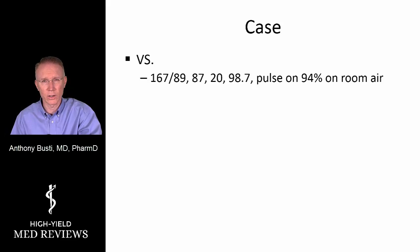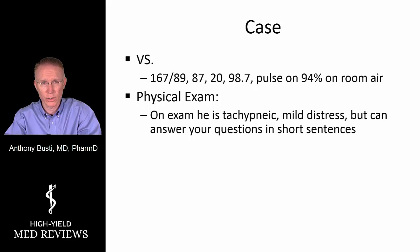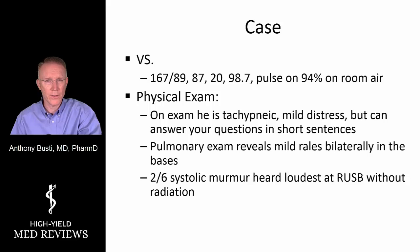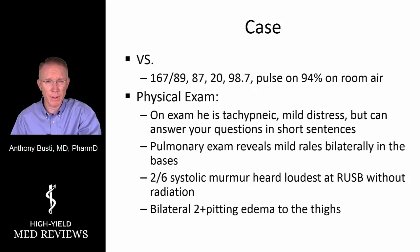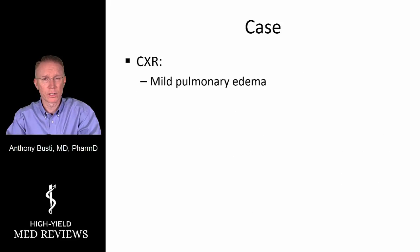That's still technically normal but on the lower end of normal, which is concerning. On physical exam, he appears in mild distress due to increased work of breathing but can answer questions in short phrases. Lung exam reveals rales at the bases bilaterally. He has a systolic murmur heard best at the right upper sternal border without radiation to the carotids, and bilateral lower extremity pitting edema, 2-plus, extending to the thigh. Chest x-ray shows new onset mild pulmonary edema bilaterally.